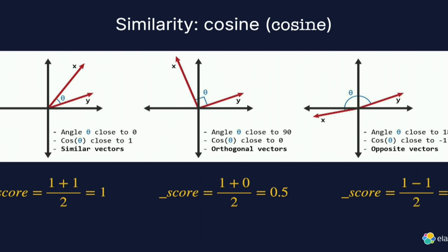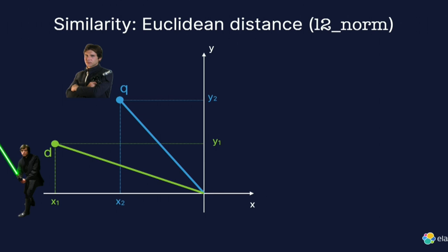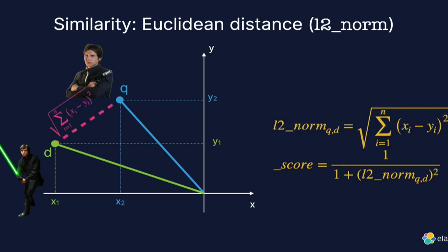If vectors are opposite, cosine is minus one, so (1 - 1) / 2 gives a score near zero. So the score is always between zero and one. If you also want to factor in the length of the vectors, you can switch to dot product, which takes vector length into account. There's also Euclidean distance as another similarity method.